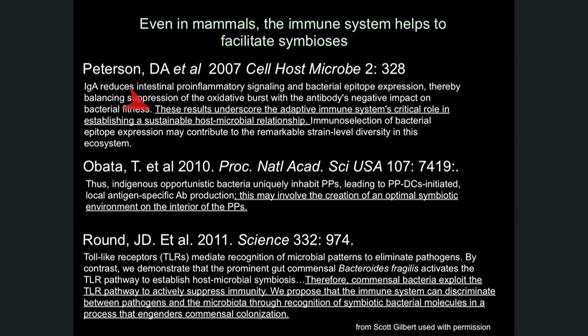Here we have three different papers. These results underscore the adaptive immune system's critical role in establishing a sustainable host-microbial relationship. This may involve the creation of an optimal symbiotic environment on the interior of the Peyer's patches — areas in your gut that are colonized. The commensal bacteria exploit the toll-like receptor pathway to actively suppress immunity. We propose that the immune system can discriminate between pathogens and the microbiota through the recognition of symbiotic bacterial molecules in a process that engenders commensal colonization.